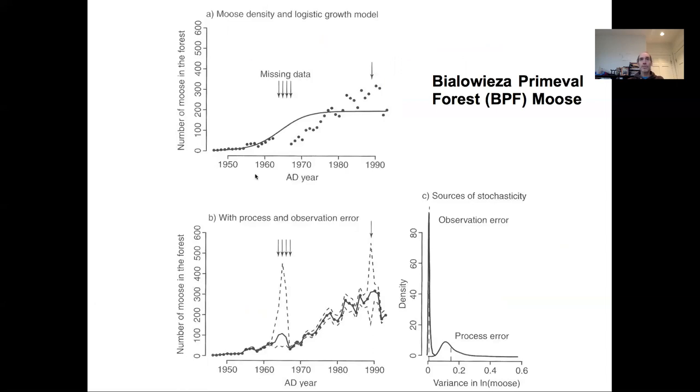This figure shows the fitting of a logistic growth model to a population time series. In this case, this is moose data from the Bialowieza Primeval Forest, which is located in Poland. This time series goes back to the 1940s, and here we have data through the mid-90s.